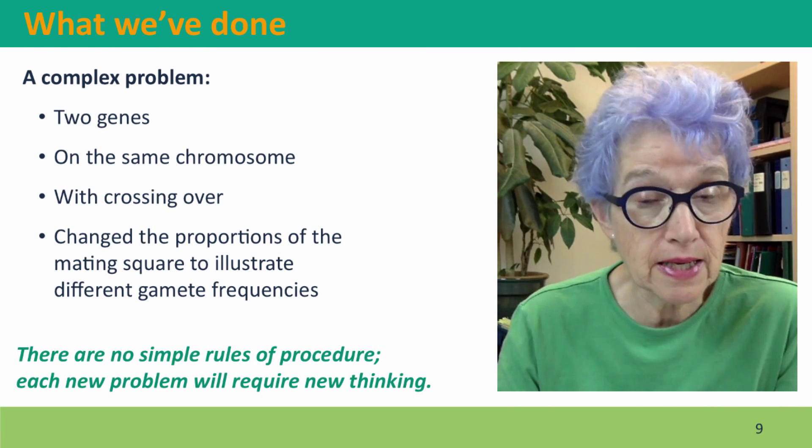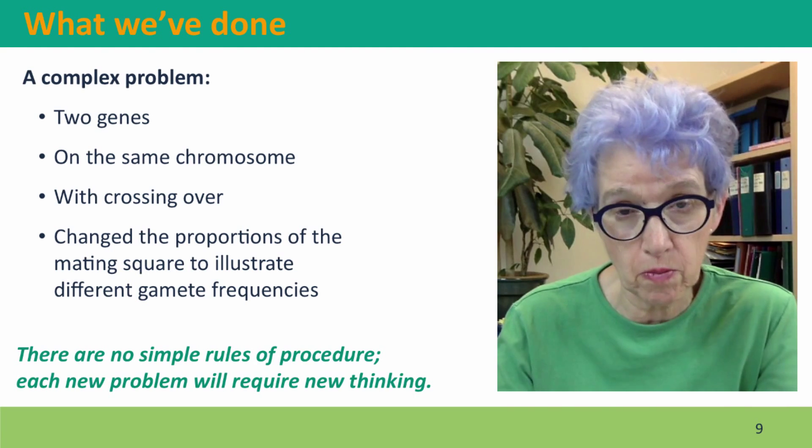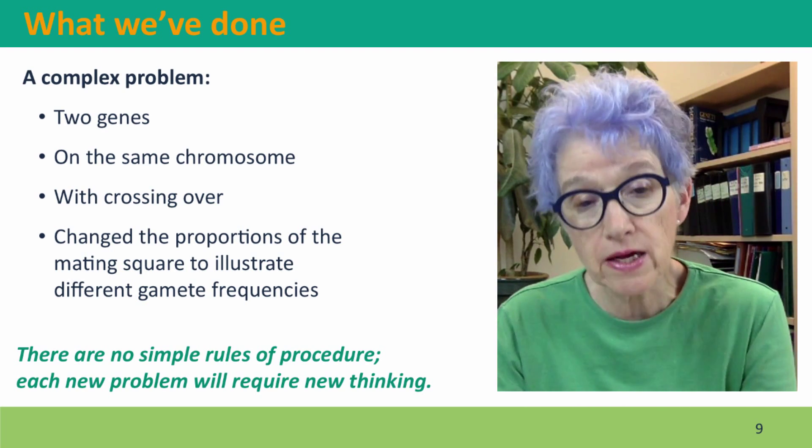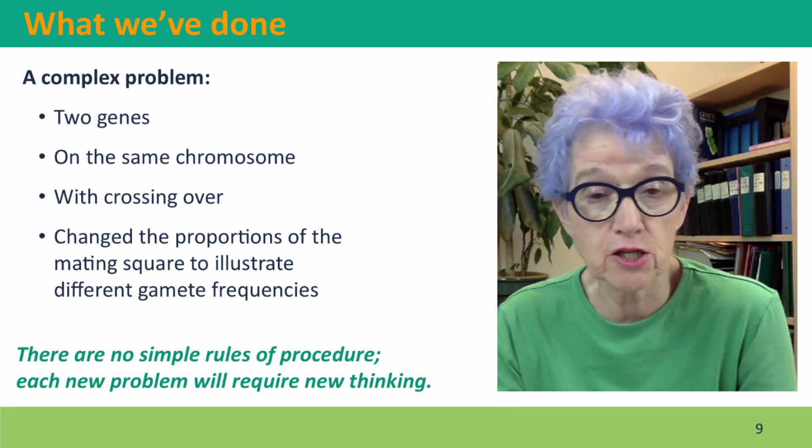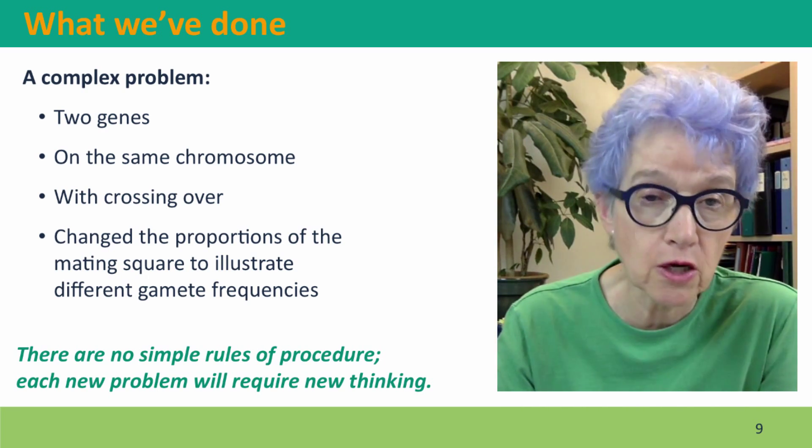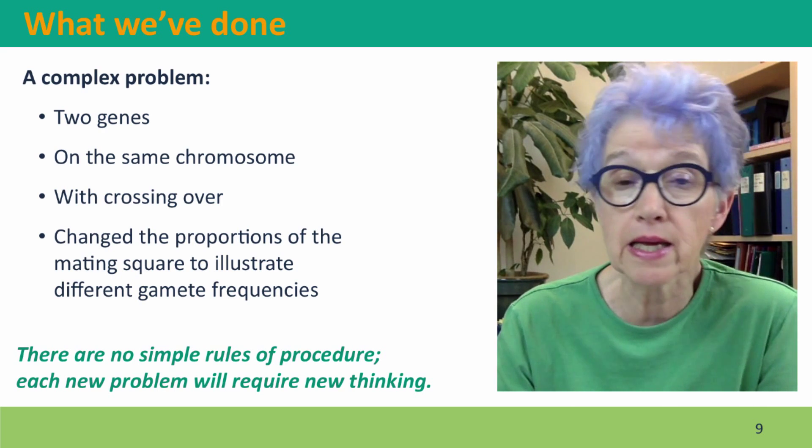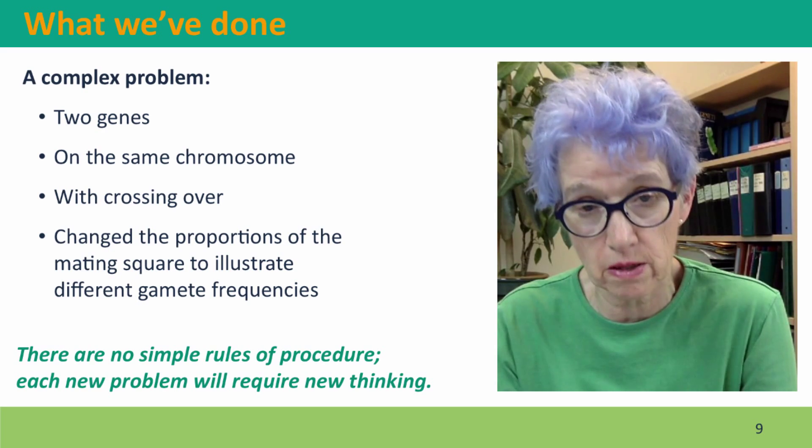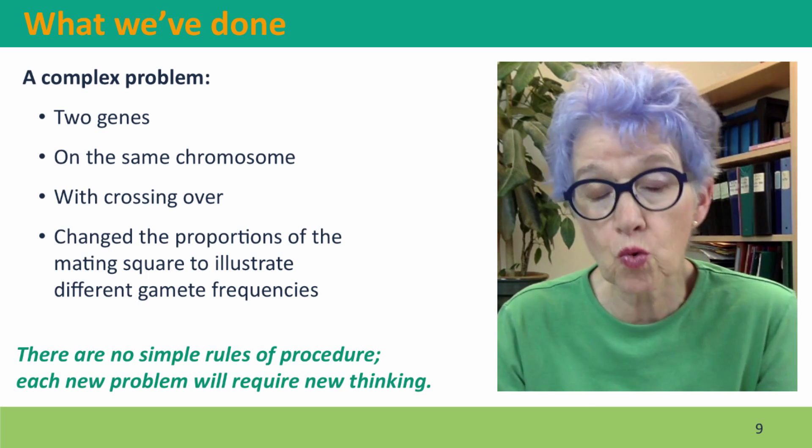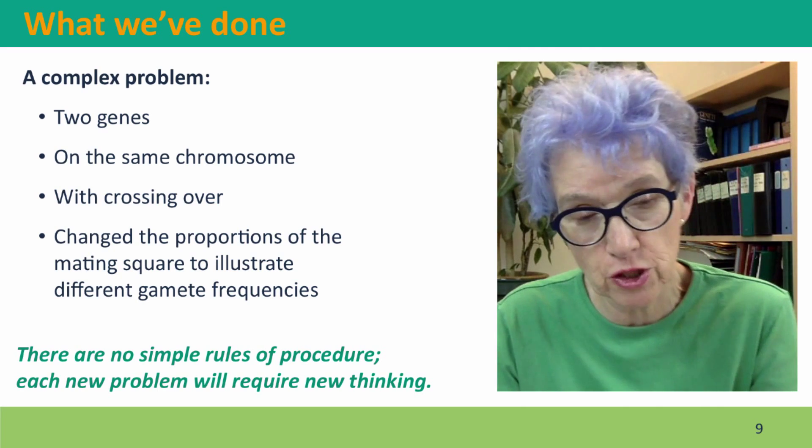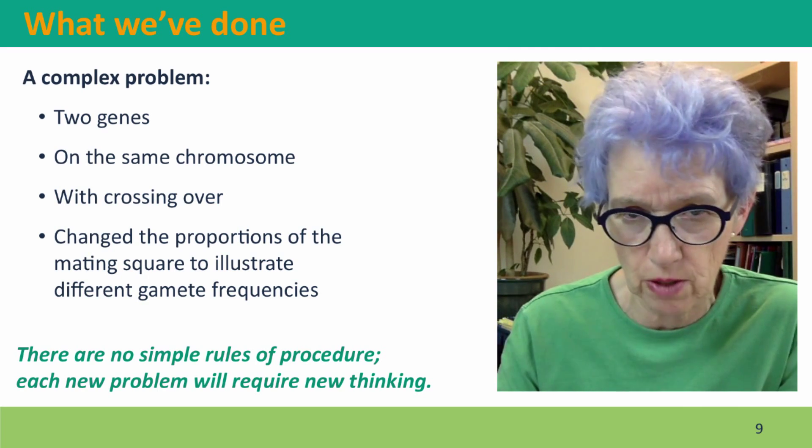So what we've done is we've done quite a complex problem. We were dealing with two genes on the same chromosome. They had a crossing over. We had to change our meeting square to diagram the cross. We had to take crossing over into account in thinking through to predict the frequencies of the different types of gametes. So this was all using things that we'd done before, except for changing the shape of the mating square, which was something new.